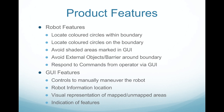At the end of the day, our robot will be able to locate coloured circles within the boundary, locate coloured circles on the boundary, avoid shaded areas marked in the graphical user interface, avoid external objects or barriers around the boundary, and respond to commands from the operator via the software. Our graphical user interface should be able to control and manoeuvre the robot, allow the operator to obtain the main robot location information, have a visual representation of mapped and unmapped areas of the terrain, and indicate the special features within the terrain.